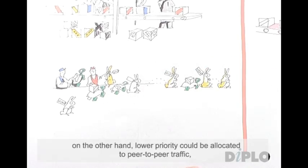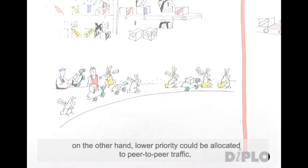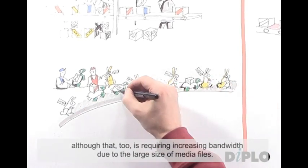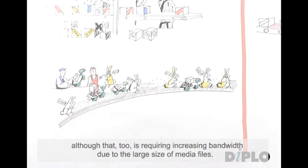On the other hand, lower priority could be allocated to peer-to-peer traffic, although that too is requiring increasing bandwidth due to the large size of media files.